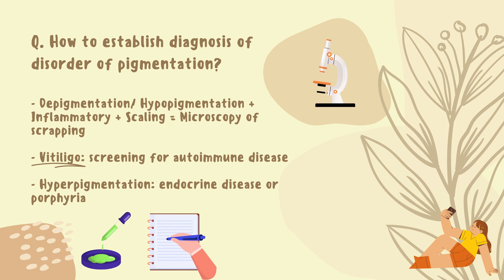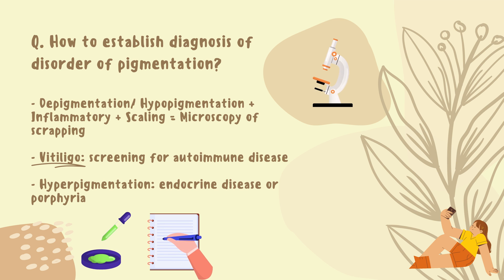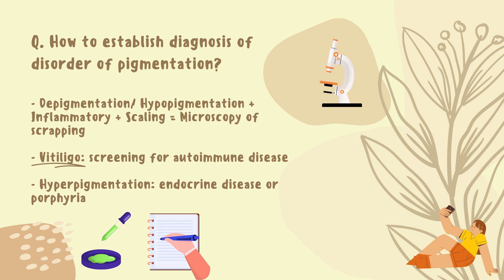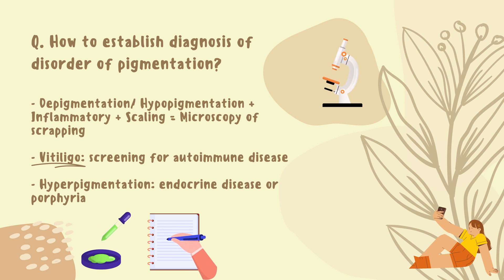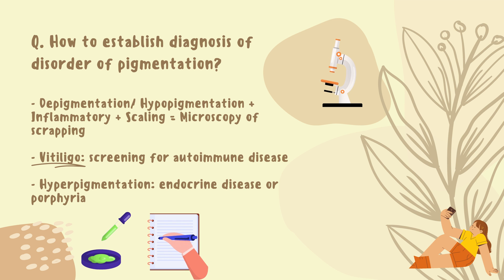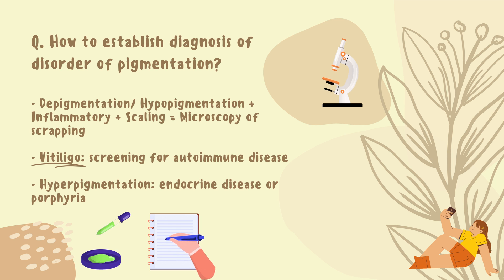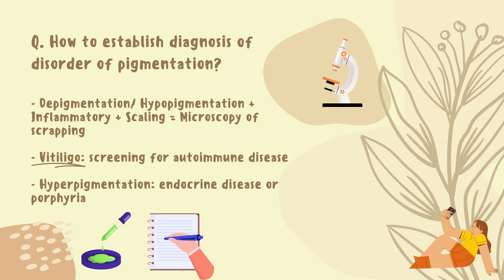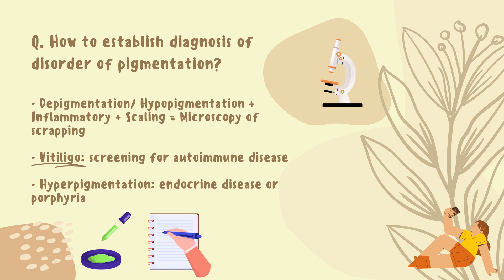How to establish a diagnosis of a disorder of pigmentation? First, depigmentation or hyperpigmentation with inflammatory skin changes can be seen under microscopy of scraping. Vital network screening for albinism, as in hypopigmentation, or other endocrine diseases such as hypothyroidism or hyperthyroidism, or for porphyria.